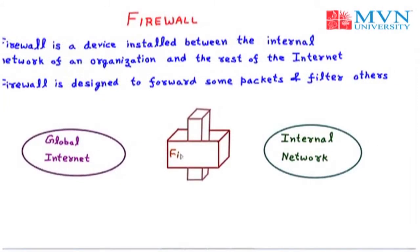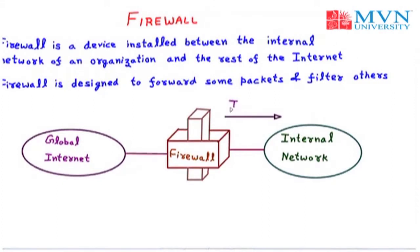The firewall is connected with both global internet as well as the internal network. A firewall may filter all incoming packets designated through a specific host or a specific server, such as HTTP. A firewall can be used to deny access to a specific host or a specific service from the organization. From the side to the internal network, we are having the incoming packets.